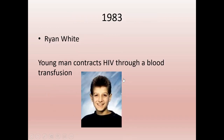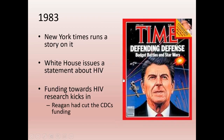In 1983, Ryan White contracts HIV through a blood transfusion. Before this moment, no national network ran anything about AIDS. Right after he contracted it in elementary school, news stations described him as 'the first innocent to contract HIV,' which is a horrible example of stigma. Right after he contracted HIV, the New York Times runs their first story, and the White House issues their first statement.